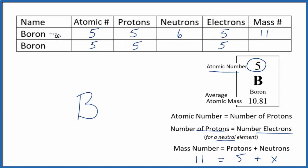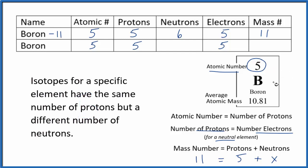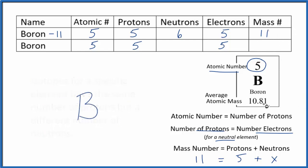We call this isotope boron-11, based on its mass number. If you have a sample of boron, most of it is going to be boron-11. Since the average atomic mass of 10.81 is closer to 11, most boron atoms will have five protons and six neutrons, giving a mass number of 11. About 80% of boron atoms are boron-11.